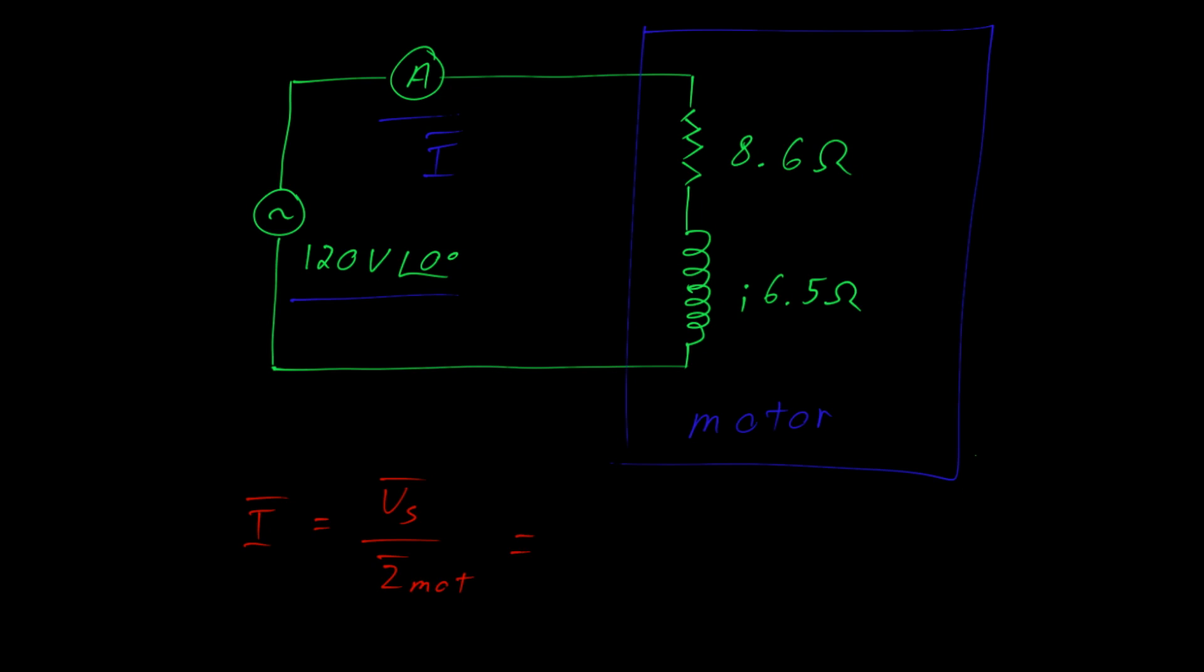We can substitute the values in as 120 volts, angle 0 degrees, divided by 8.6 plus J6.5.